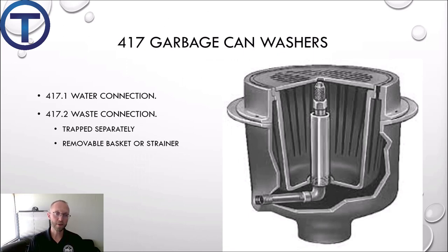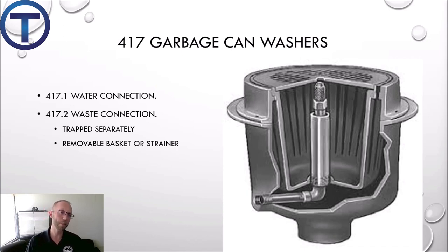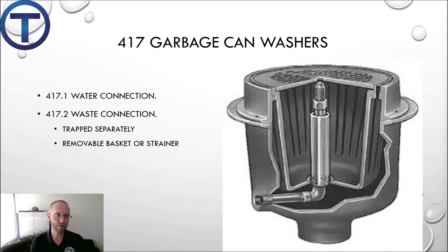4.17 goes over garbage can washers — a fixture where you take the garbage can, turn it upside down and blast water into it to flush it out. It will need a water connection and a drain connection, and it needs to be trapped separately as its own fixture, have a removable strainer, and be protected by an air gap.